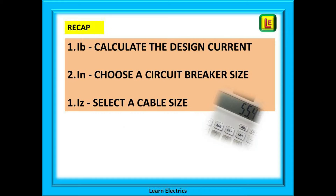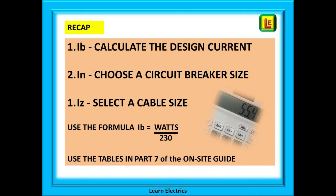So a recap: first, calculate IB the design current; second, decide on the size of breaker for IN; and finally, select a cable size to give us IZ. Learn to use this very easy formula: IB equals watts divided by 230. All the other information you need will be in part 7 of the on-site guide.